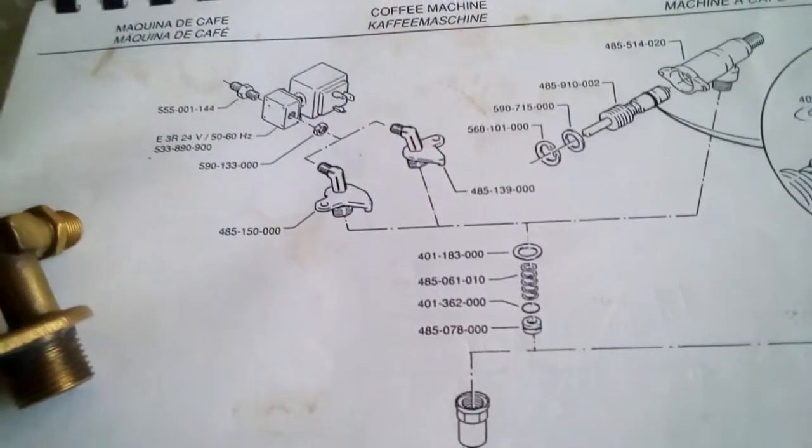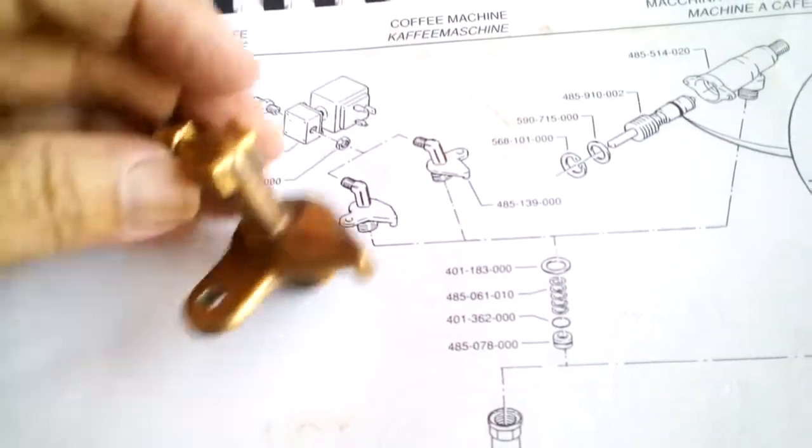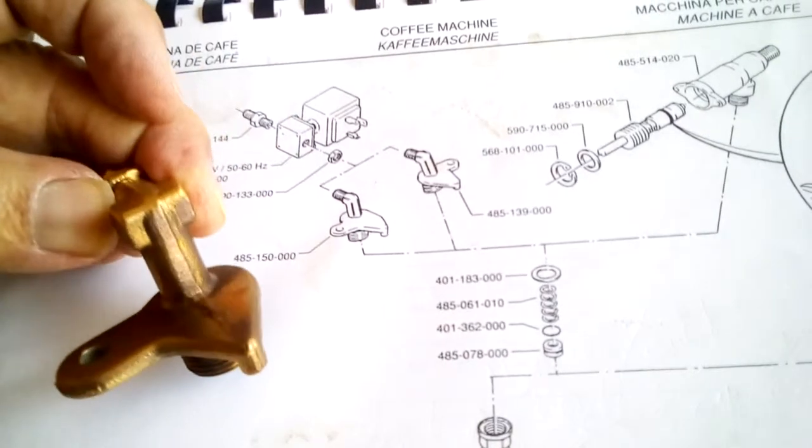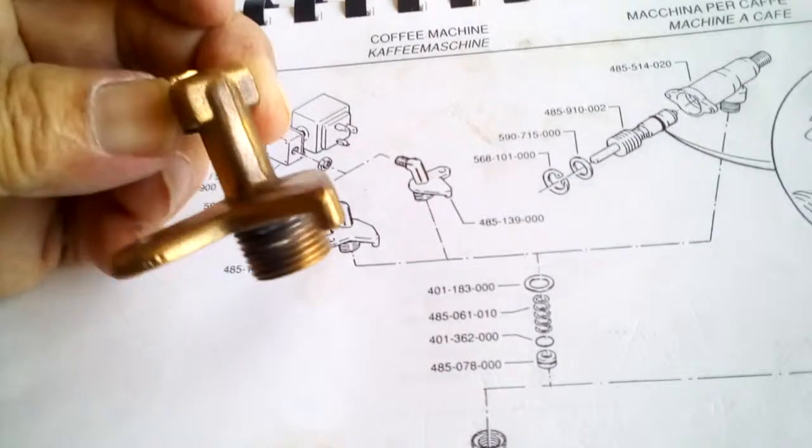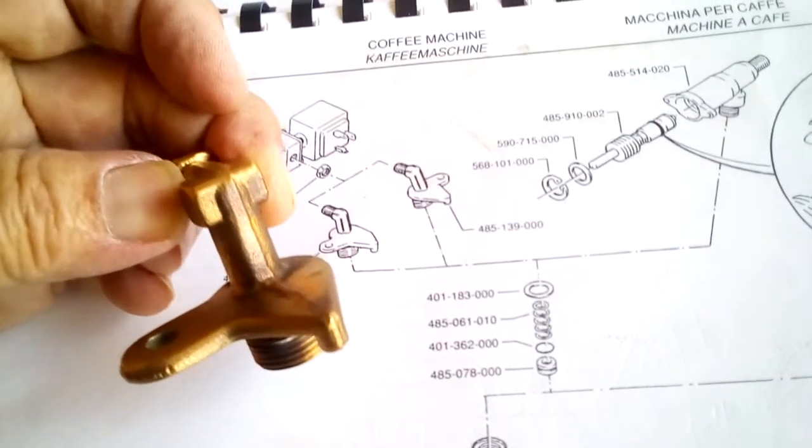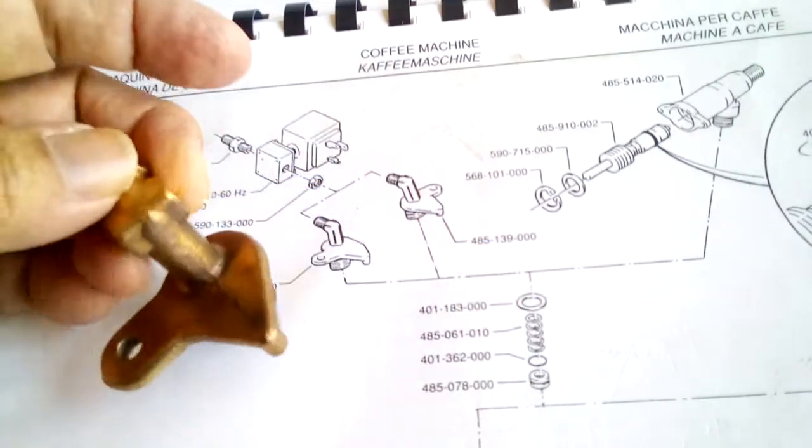And then again we see, notice this part comes in two different versions and we're looking at the left-hand side 485-150-000, this is the left-hand side of the machine, and then the right-hand side of the machine which is the 485-139.